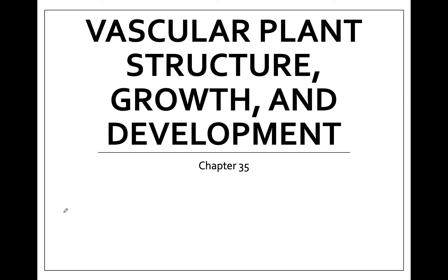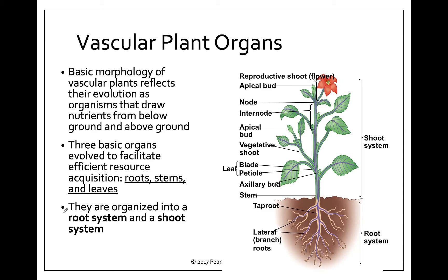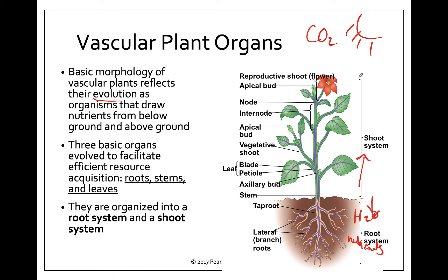Chapter 35 covers different structures of the plant. We start with the main basic organs — plants have typically three organs: roots, stems, and leaves. These reflect the evolution of plants on land, getting CO2 and sun from above the ground and water and nutrients from below. They grow up and grow down, broken into two different systems: the shoot system has the stems and leaves.